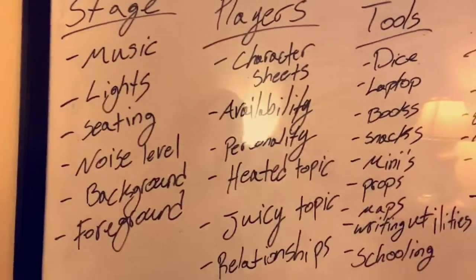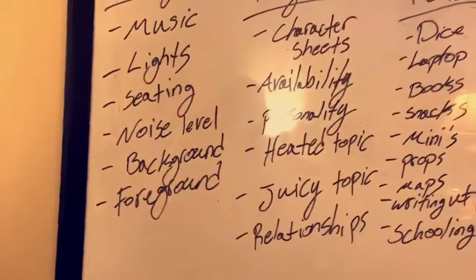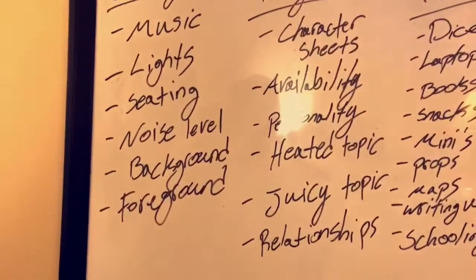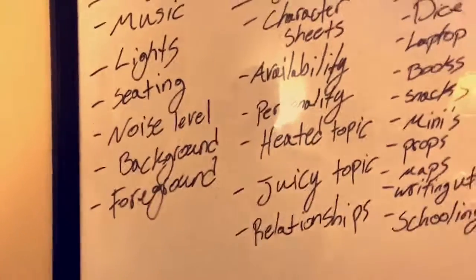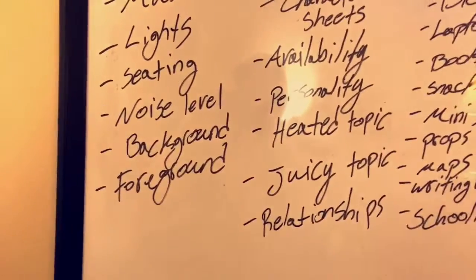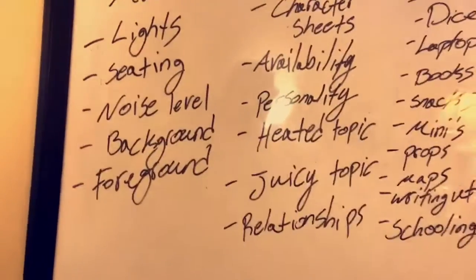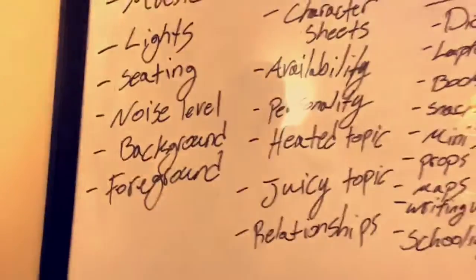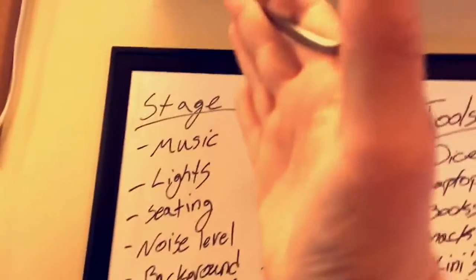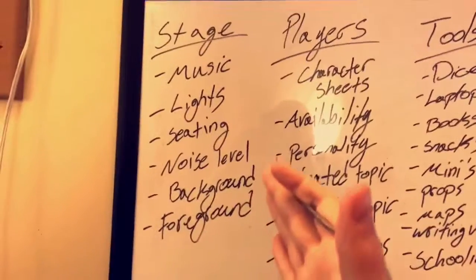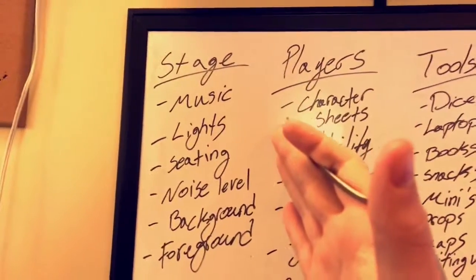Seating is important because you want to know where your players are sitting — are they comfortable seats, not-so-comfortable seats — it might affect the overall temperament of the game. Background is like what is in the background, what does it look like. Foreground is pretty much like are you guys playing on a table, are you doing theater of the mind style, are you guys playing on couches? This is your stage, and it's important to set up how you want it to get the most effective story that you can.